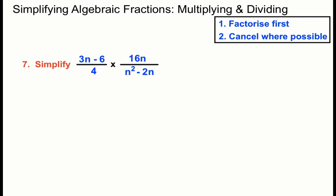Okay, this one we've got a couple of factorising opportunities. On the top left there we've got 3 that can come out. 3 times n and 3 times minus 2 will get us back to 3n minus 6. And that's over 4.